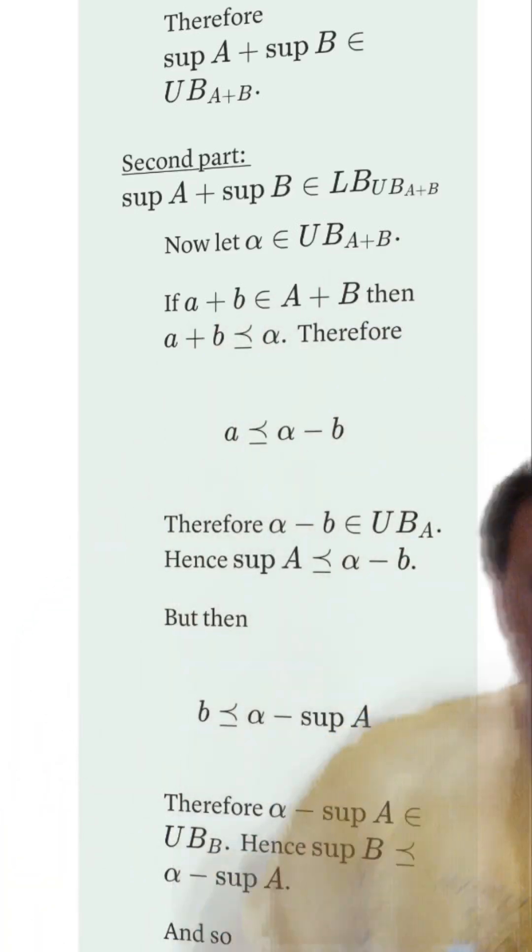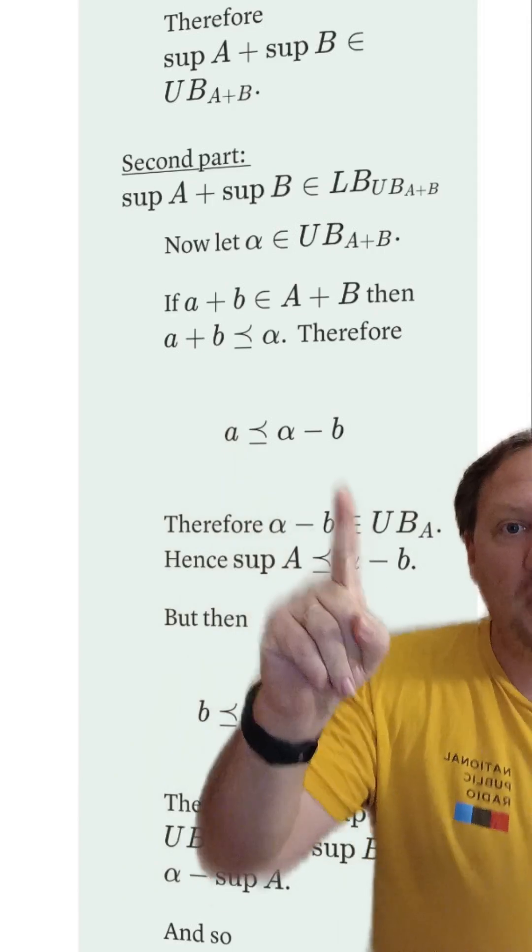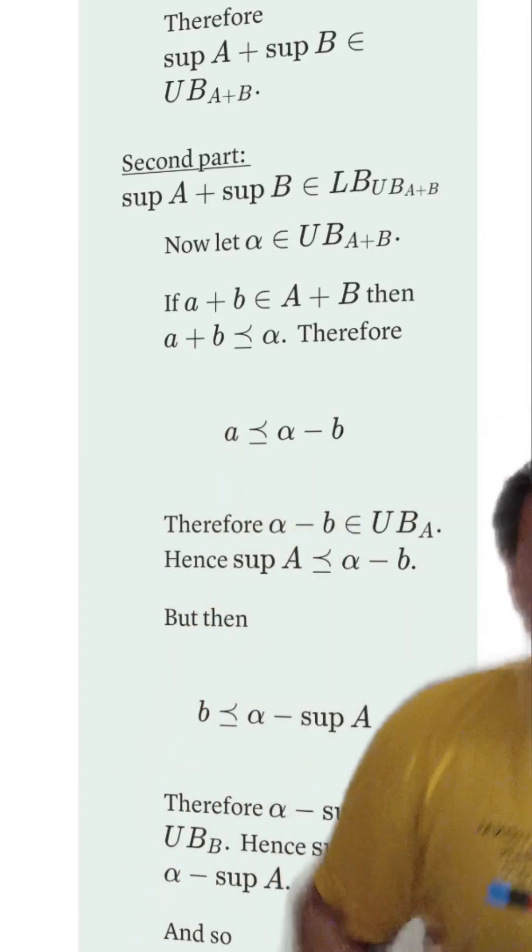Let's take an arbitrary element out of the set. Now fix B and solve for A. That makes this thing an upper bound of the set A. Therefore,